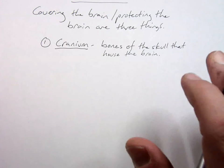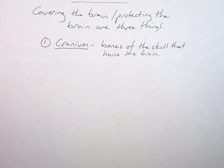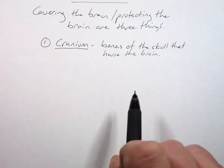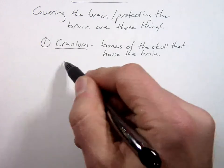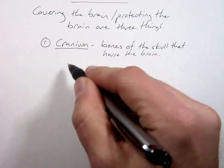The cranium, the skull is divided into two sets of bones: cranial bones and facial bones. If it doesn't house the brain in some way it's a facial bone like maxilla, mandible, vomer, nasal, lacrimal, zygomatic. But ones that do house the brain would be like what?